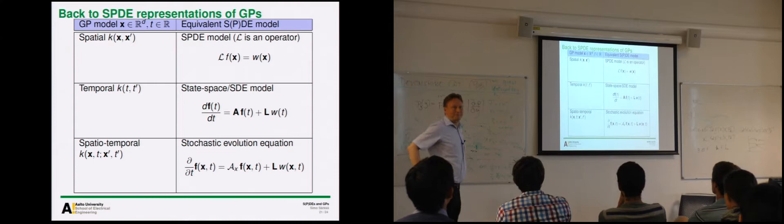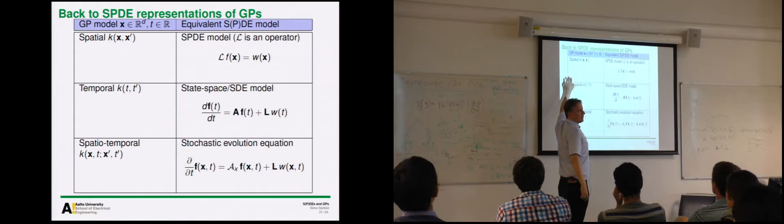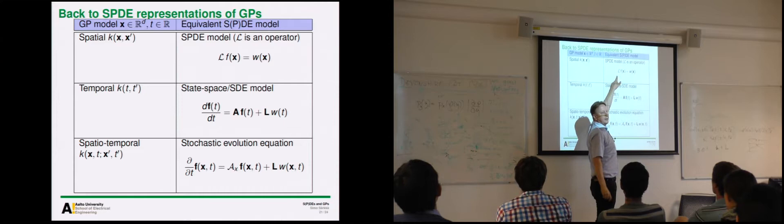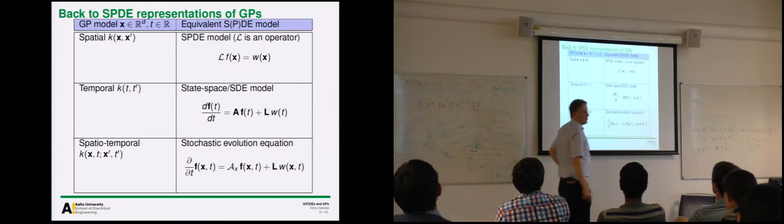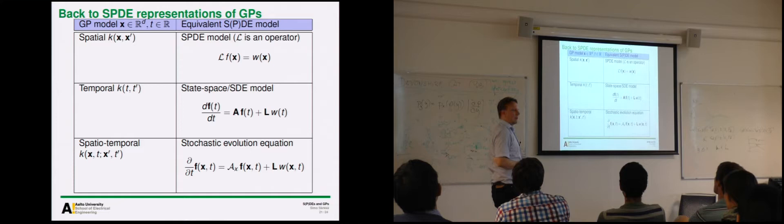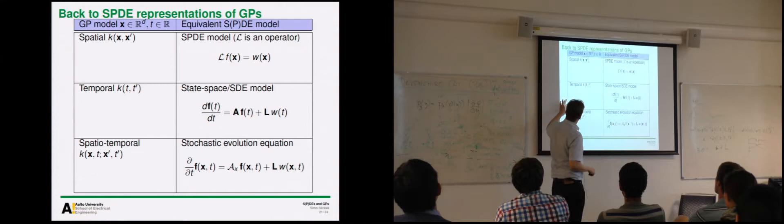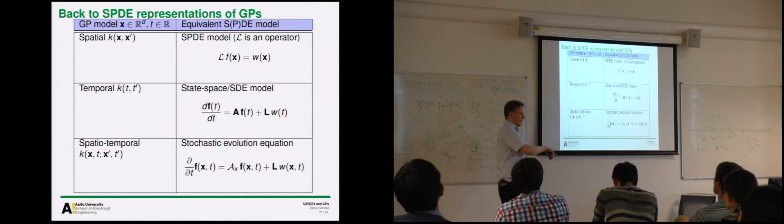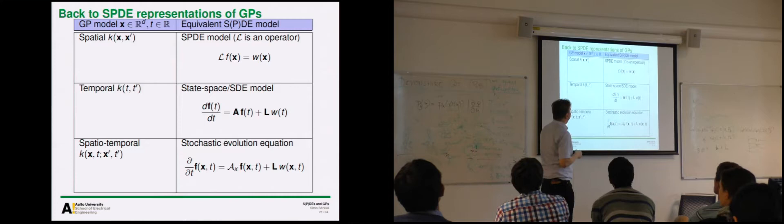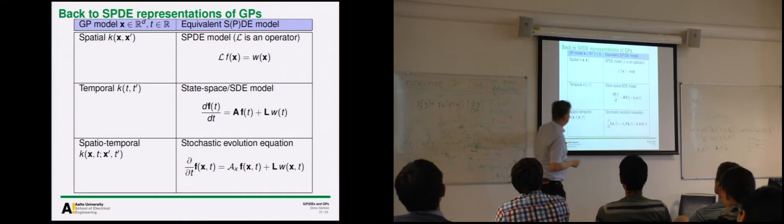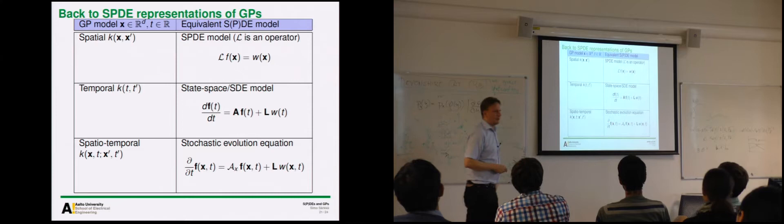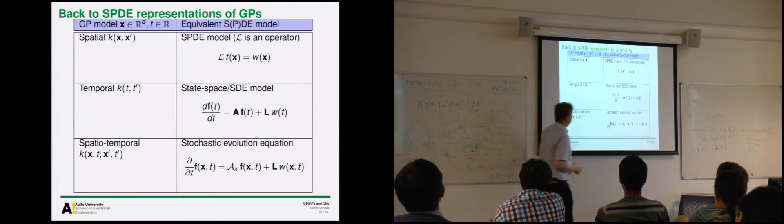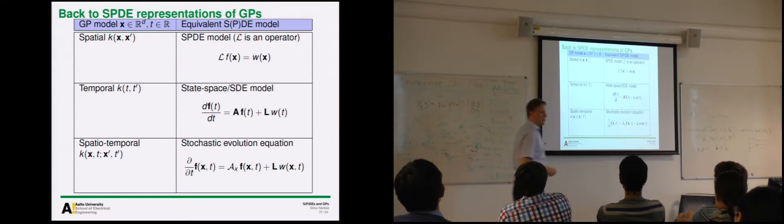In conclusion, going back to the full picture: in the spatial case, you get an SPDE model where the operator might be the Laplacian plus something, driven by a white noise field — the Matern covariance was originally derived from this kind of SPDE. In the temporal case with only one input variable, you get a linear SDE, and for the Ornstein-Uhlenbeck case you can use a Kalman filter and smoother to solve GP regression in linear time. In the spatiotemporal case, similar results hold but you need space-time Kalman filtering methods, which have their own challenges. In principle, you can map covariance functions to these kinds of equations.